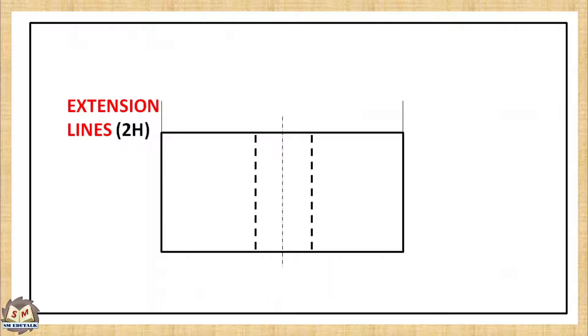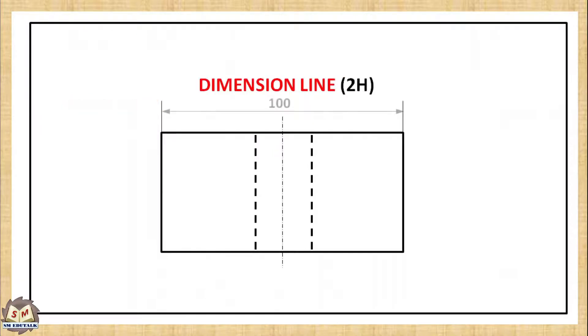Dimension line is also a thin continuous line used to indicate the measurement of a portion of the drawing. Here, the length of the rectangle is 100mm. It is represented by the dimension line, which is approximately 10mm above the object line and held by extension lines at both ends. Use 2H pencil to draw dimension line.